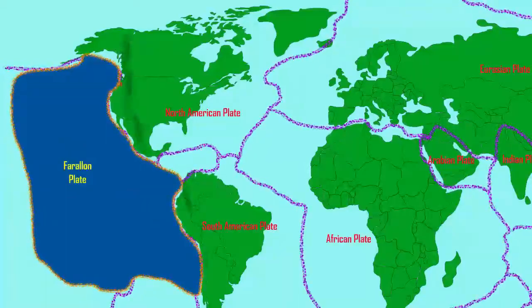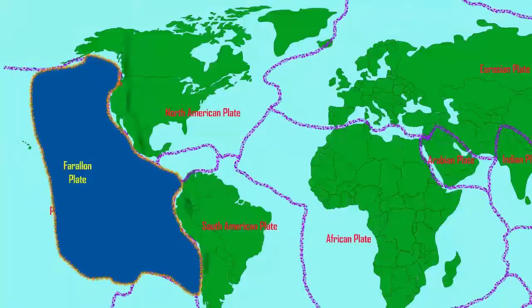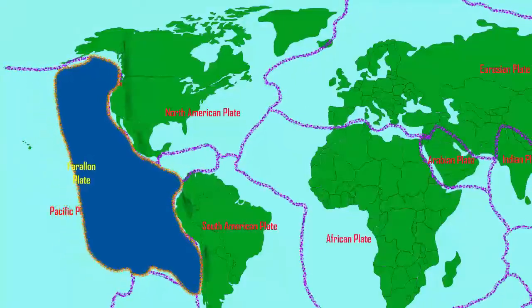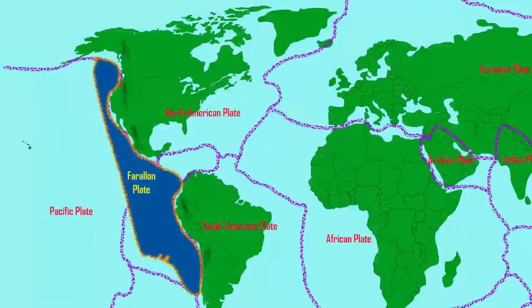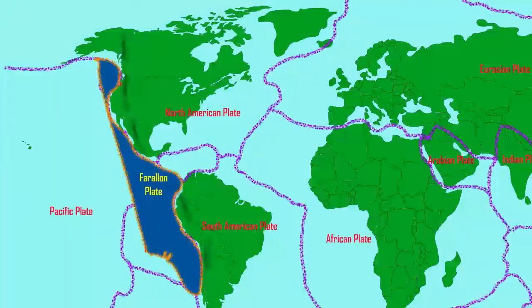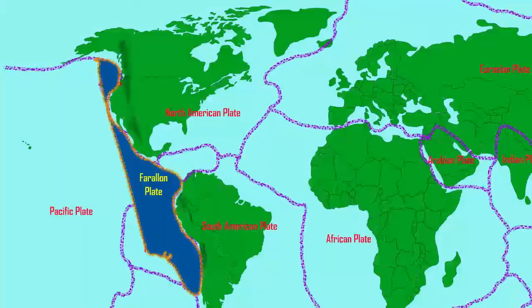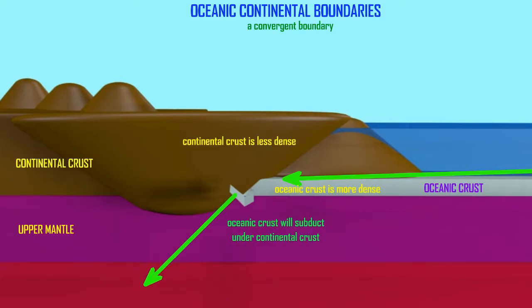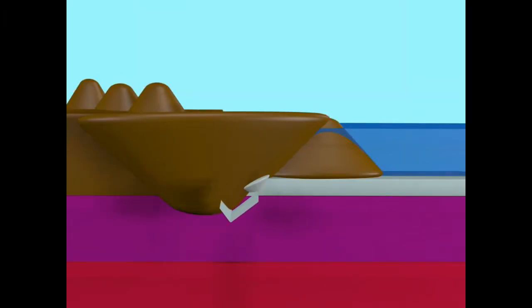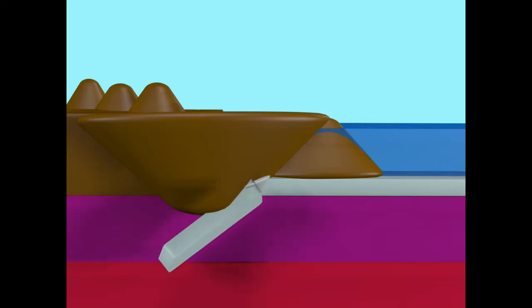Following the breakup of Pangaea, North America collided westward with another plate — not the Pacific plate which currently contacts much of the western coast, but a previous plate which still has some remnants today: the Farallon plate. As the Farallon plate was subducted under North America, the material from it was partially melted and formed magma, helping to cause uplift and forming some of the igneous material which would contribute to mountain ranges.